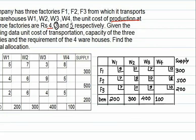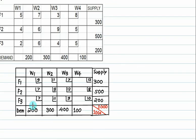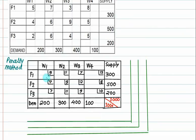The total demand is 800 plus 1000, and this one is also 1000, so this is a balanced transportation problem. We will prepare the basic feasible solution using the penalty method. The penalty for the first row: minimum cost is 7, next is 9, so the penalty equals 2.